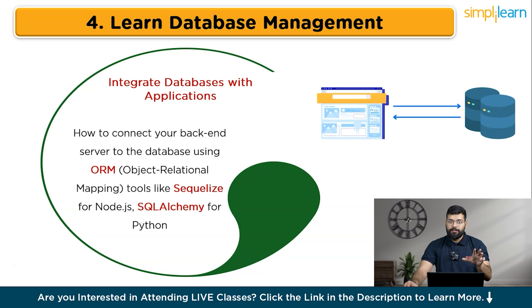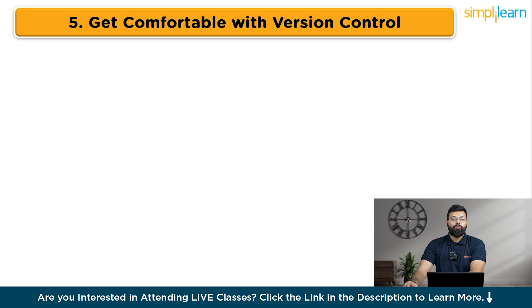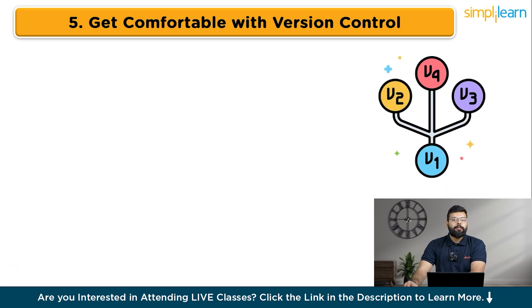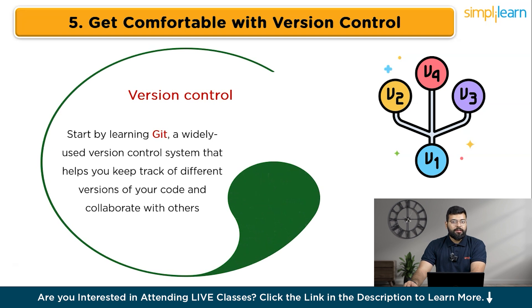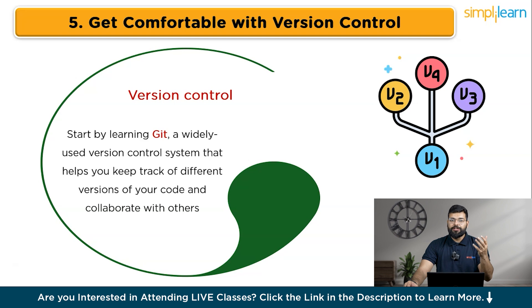Now that you have a good understanding of database management — covering SQL, NoSQL, and integrating databases with applications — the next step is to get comfortable with version control, which is essential for managing and tracking changes in your code. You can start by learning Git, a widely used version control system that helps you keep track of different versions of your code and collaborate with others. Use platforms like GitHub, GitLab, or Bitbucket to host your repositories and manage your code online. Practice creating repositories, making commits, branching, and merging changes. For instance, create a GitHub repository for your projects to track changes and collaborate with others seamlessly.